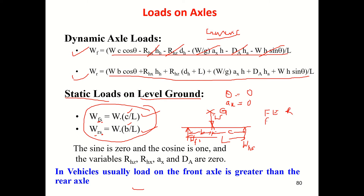We have front engine rear engine rear wheel drive configurations. Depending on the architecture, the center of gravity position and the values of c and b will change, and accordingly the load on the axles will change.